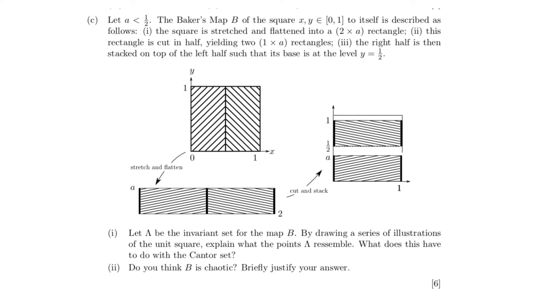And third, the right half is then stacked on top of the left half, such that its base is at the level y equal to a half. Then you have the two questions. The first question asks, let lambda be the invariant set for the map B. By drawing a series of illustrations of the unit square, explain what the points of lambda resemble. What does this have to do with the Cantor set? The second question asks, do you think this map B is chaotic? Briefly justify your answer.